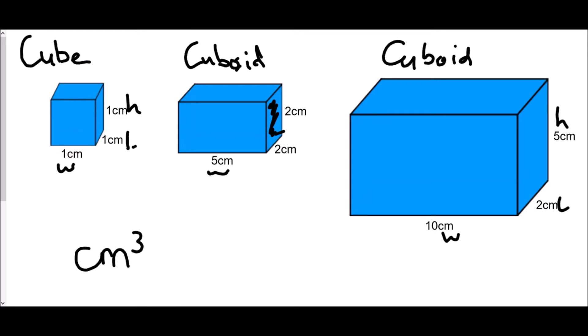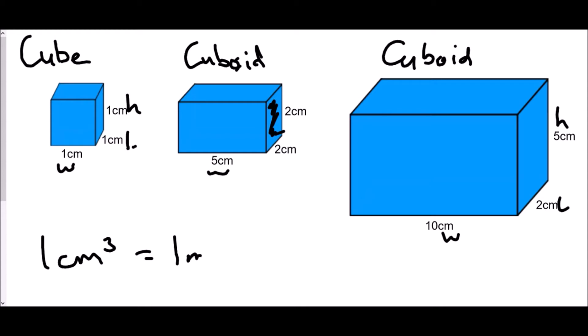The first shape was a one centimeter by one centimeter by one centimeter cube — that is one centimeter cubed. A side note: one centimeter cube is exactly the same as one milliliter, so if we were talking about liquids, one milliliter would fit inside one centimeter cube.